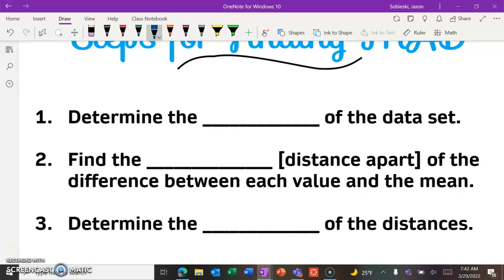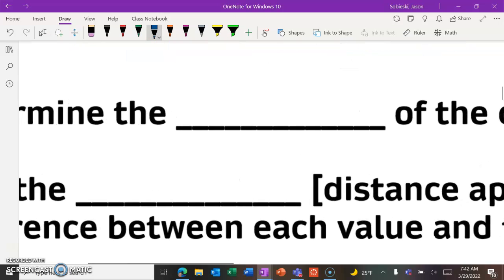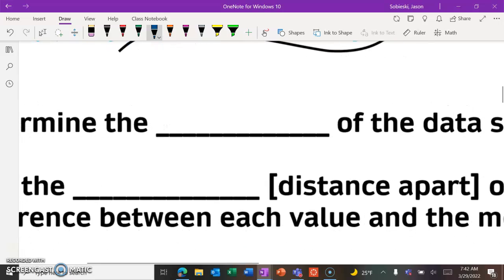There are basically three steps that we're going to have to follow in order to calculate MAD. The first is to determine the mean, which again is the average, of the data set.